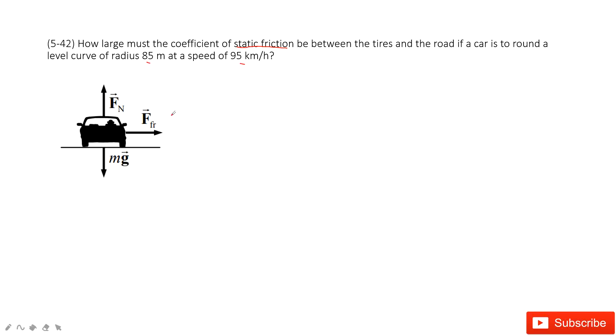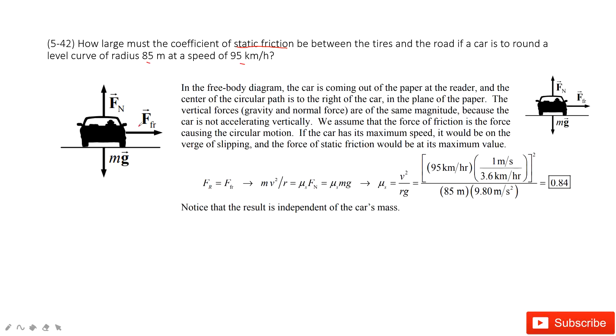And this central force equals mass times v squared divided by r, and then you can find μ_s. See, this is how we do that. Because the central force is just due to the friction, and this friction is μ_s times mg.